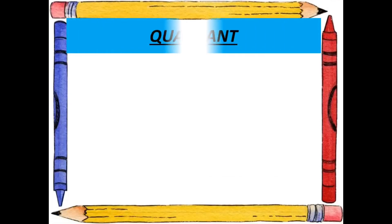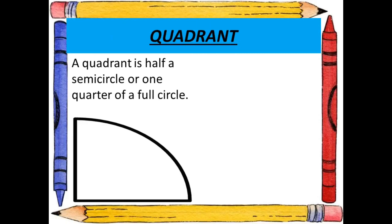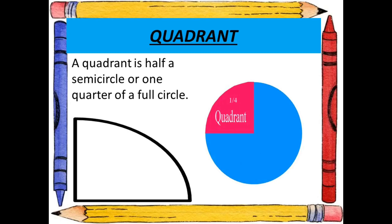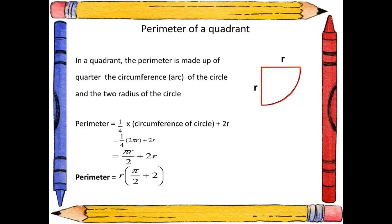A quadrant is half a semicircle or one quarter of a full circle. For the perimeter of a quadrant, it is made up of a quarter of the circumference and two radii of the circle. That means perimeter = (1/4) × 2πR + 2R, which equals πR/2 + 2R.